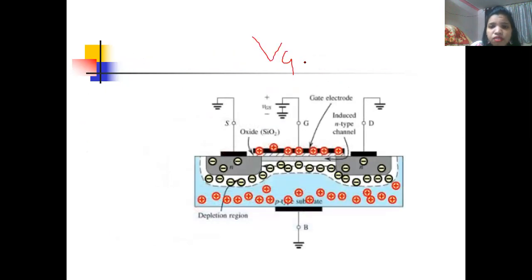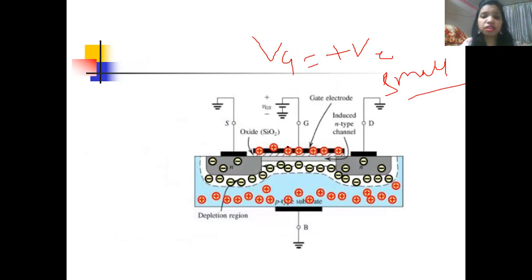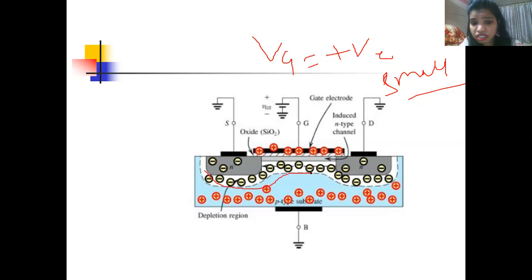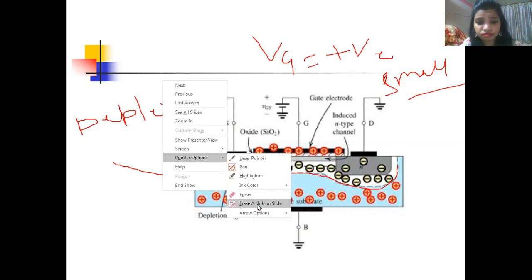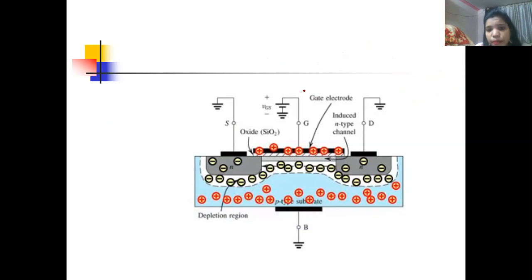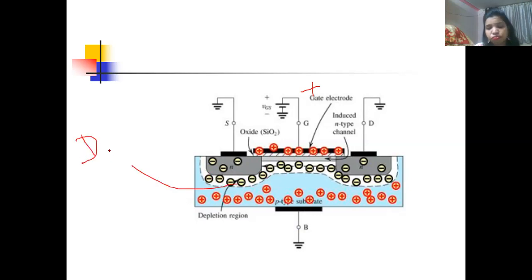In the second condition, a small positive VG is applied. Since positive repels positive, all the holes repel away from the gate region. When all the holes leave this region, it is called the depletion region — the region is depleted of mobile carriers. So when a small positive voltage is applied, depletion occurs.